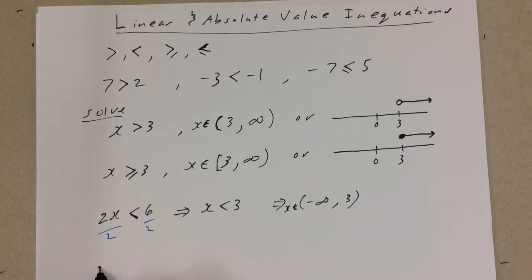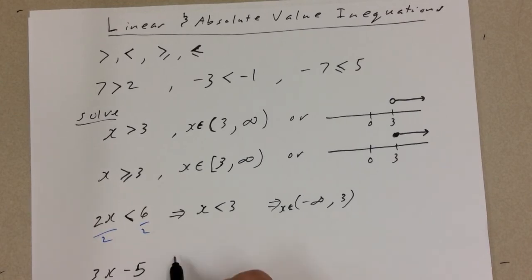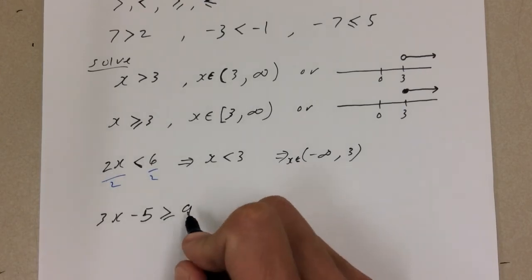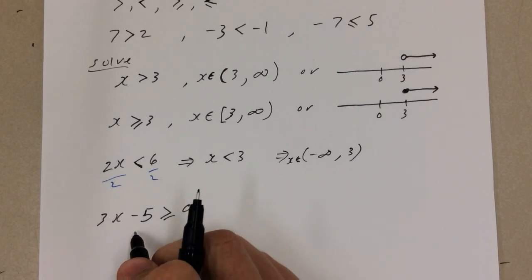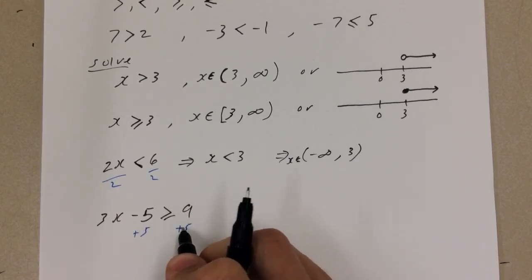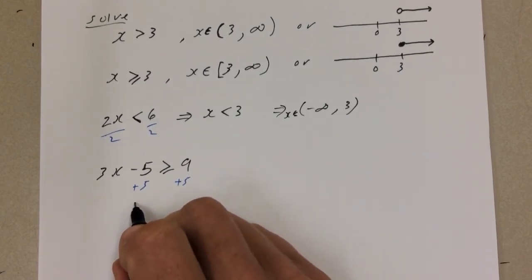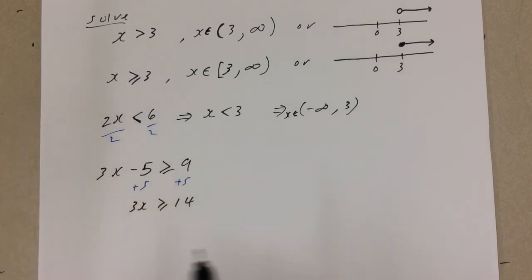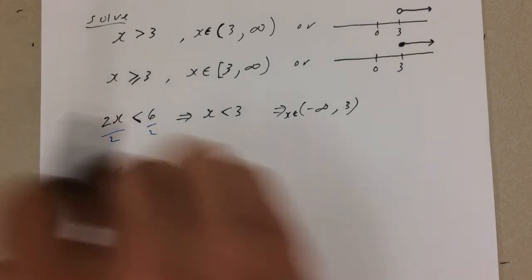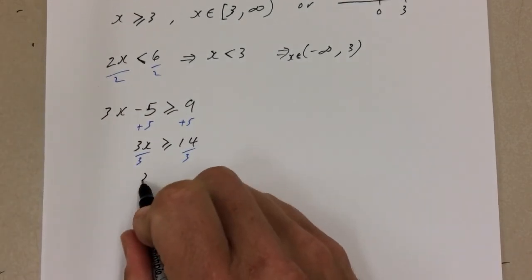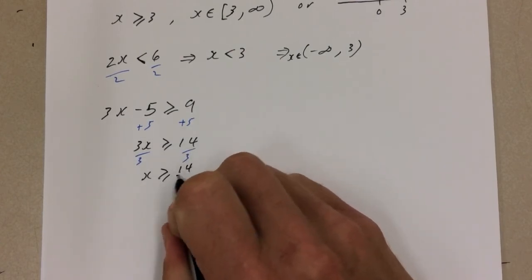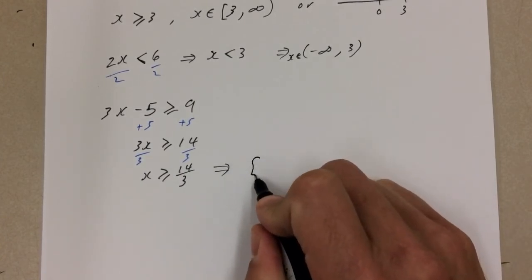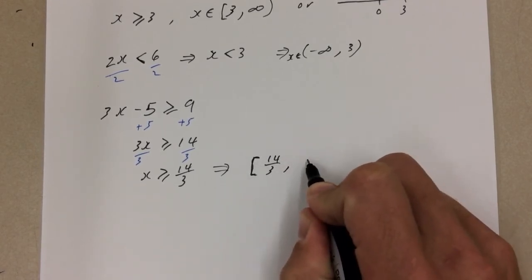For something like 3x minus 5 is greater than or equal to 9, we add 5 to both sides to get 3x ≥ 14, then divide by 3 to get x ≥ 14/3. In interval notation, that gives us the square bracket interval: [14/3, infinity).